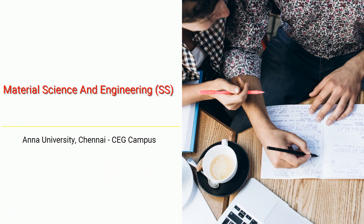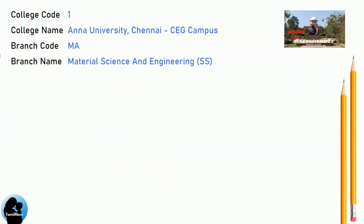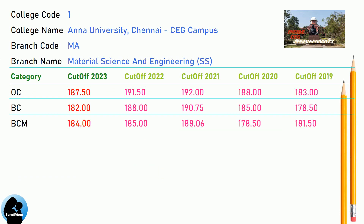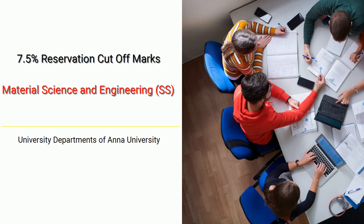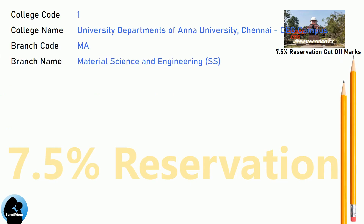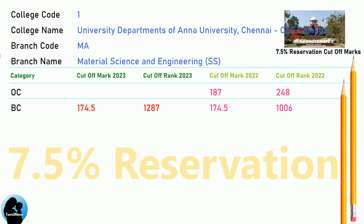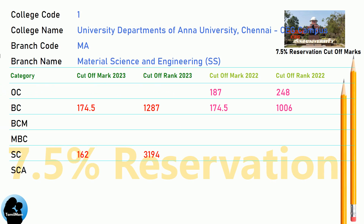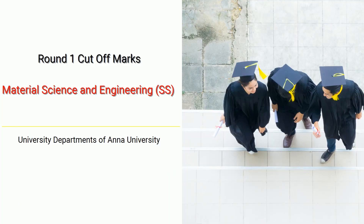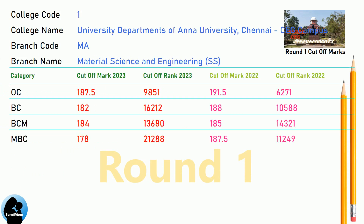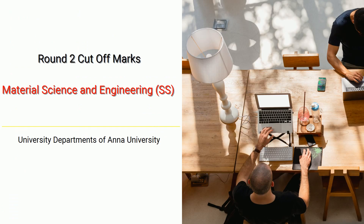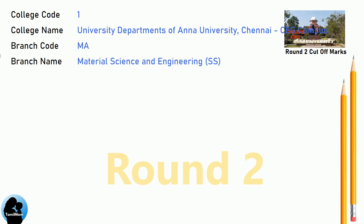DNA Cut-Off for Anna University Chennai CEG Campus in Material Science and Engineering. DNA 7.5 Reservation Cut-Off for Anna University Chennai CEG Campus in Material Science and Engineering. DNA Round 1 Cut-Off for Anna University Chennai CEG Campus in Material Science and Engineering. DNA Round 2 Cut-Off for Anna University Chennai CEG Campus in Material Science and Engineering.